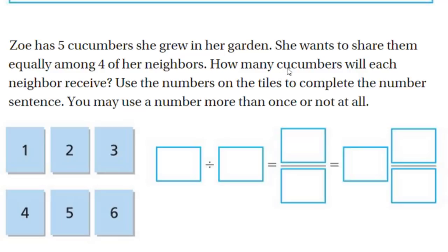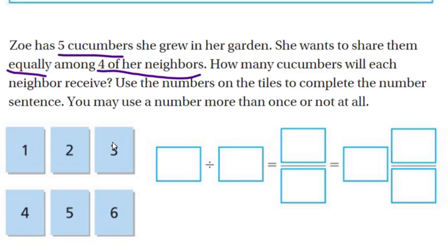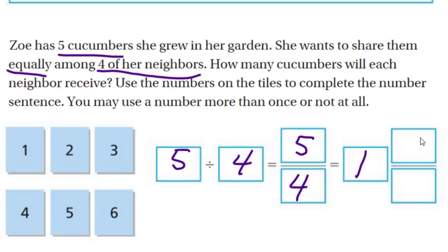Next problem: Zoe has five cucumbers she grew in her garden, and she wants to share them equally among four of her neighbors. How many cucumbers will each neighbor receive? Our dividend is five cucumbers, and our divisor is four neighbors. So that's five divided by four. We have one whole in there — four fourths makes one whole — and then what fraction is left over? We have a quarter. So each neighbor receives one and one quarter cucumbers.